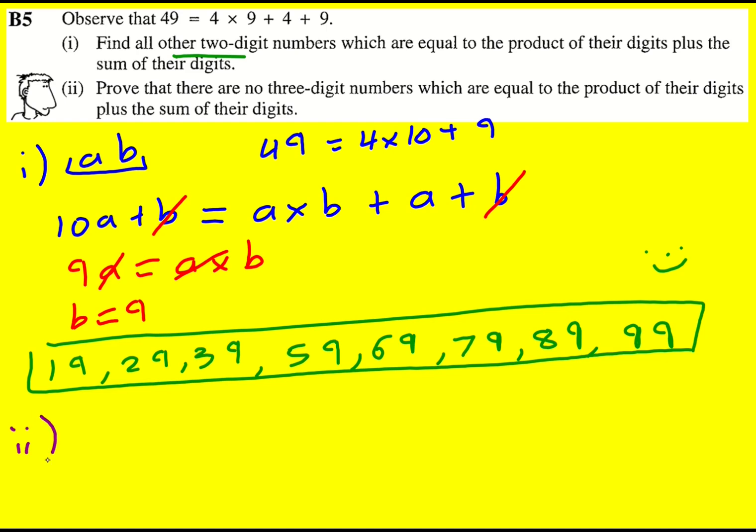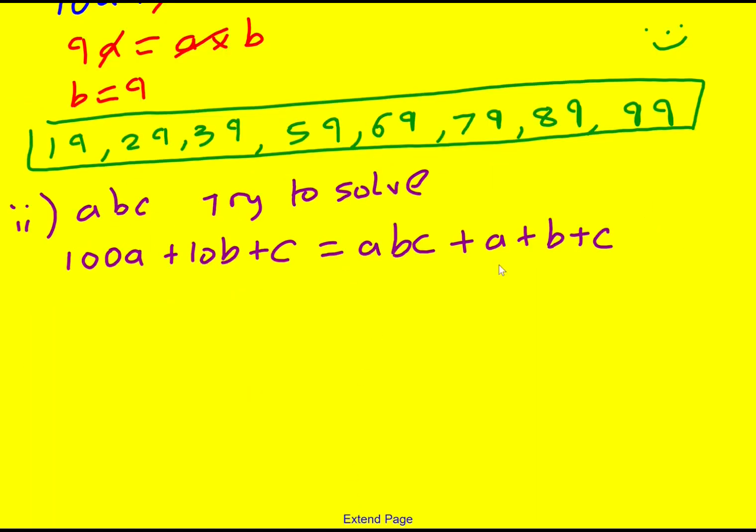We're now asked to prove that there are no three-digit numbers which are equal to the product of their digits plus the sum of their digits. So we could write this number as ABC, but go straight then to our powers of 10 form, 100A plus 10B plus C. And so try to solve this equaling ABC, where ABC now is the multiplied together, plus A plus B plus C. And I should note we're seeking to find a contradiction.